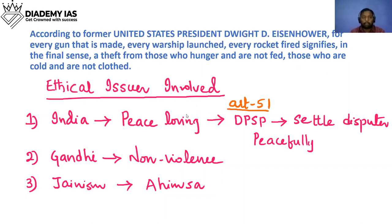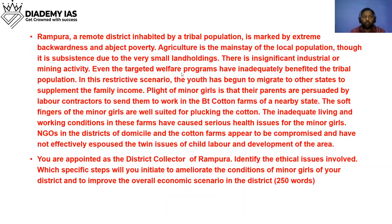This is a smaller case study about child labor. Rampura is a remote district inhabited by a tribal population, marked by extreme backwardness and abject poverty. Agriculture is the mainstay of the local population, though it is subsistence agriculture due to very small land holdings — people are able to just feed themselves with the amount of produce they make.